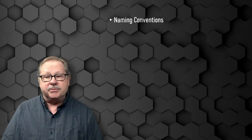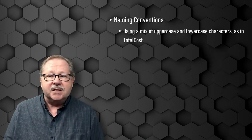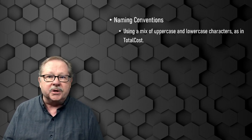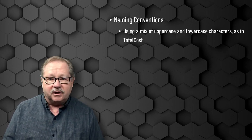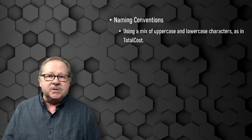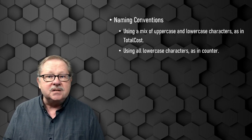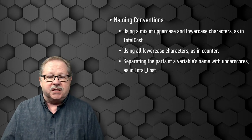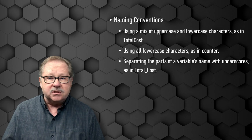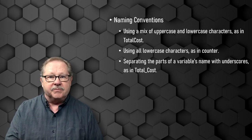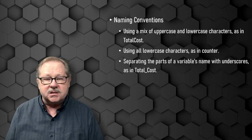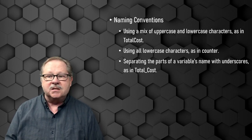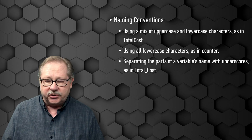There are also some naming conventions that you might consider. You can use a mix of uppercase and lowercase characters, like the word TotalCost where the T and the C are uppercase — that's sometimes called camel casing. Using all lowercase, as in the word counter. You could also separate words by underscores, so TotalCost becomes total_cost. That way you can separate the words and make it look a little more like English, but since you can't use a space, the underscore becomes a good alternative.